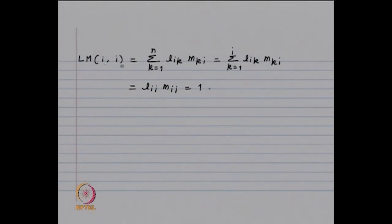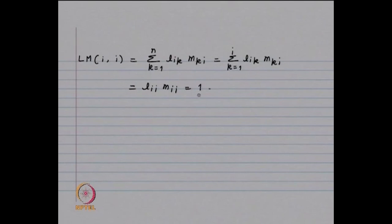Now it remains to show that the diagonal entries are equal to 1. The diagonal entry (LM)_{ii} is given by the i-th row of L multiplied by the i-th column of M, which equals the summation k = 1 to n of L_{ik} M_{ki}. As before, this summation reduces to k = 1 to i of L_{ik} M_{ki}. The only non-zero term is when k = i, giving L_{ii} M_{ii} = 1 × 1 = 1. Thus the product of two unit lower triangular matrices is unit lower triangular.